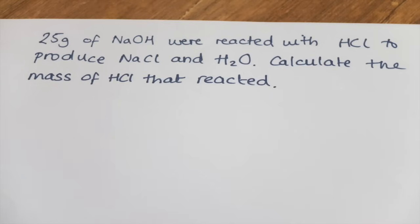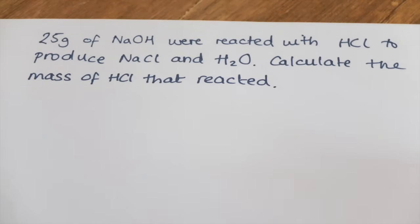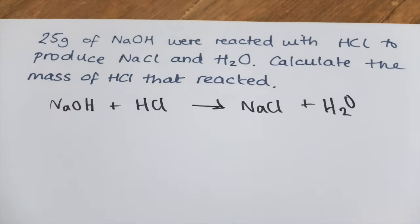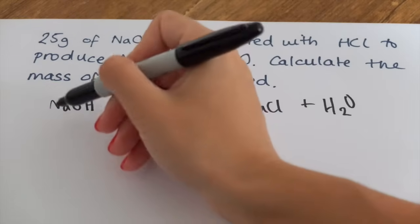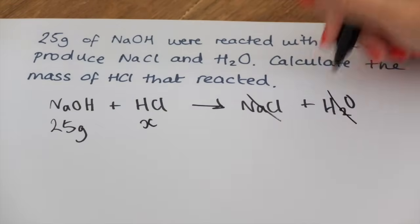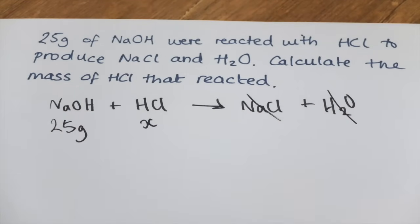My final mole calculations for today's tutorial are going to be about reacting masses — that's when you have a certain amount of one substance and need to work out how much of another substance was present. The very important first step is to make sure you have a balanced symbol equation. We've got sodium hydroxide reacting with hydrochloric acid to produce sodium chloride and water. We can see that equation is already balanced. We know that 25 grams of sodium hydroxide were reacted. We're trying to find the mass of hydrochloric acid, so I'll write x there. I'm not interested in sodium chloride or water, so I'll cross those out.